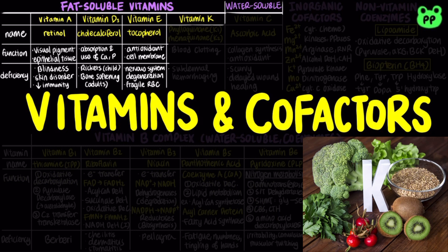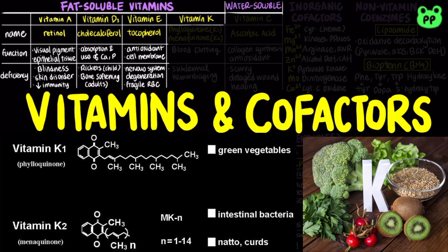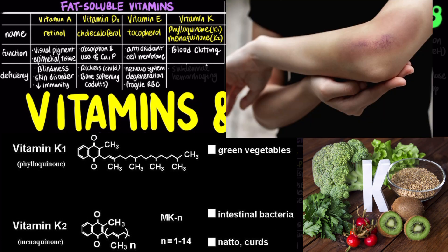Vitamin K has two major forms. Vitamin K1, phylloquinone, which is found in green plant leaves, and vitamin K2, menaquinone, which is formed by bacteria living in the vertebrate intestine. The aromatic ring of vitamin K undergoes a cycle of oxidation and reduction during the formation of active prothrombin, a blood plasma protein essential in blood clotting.